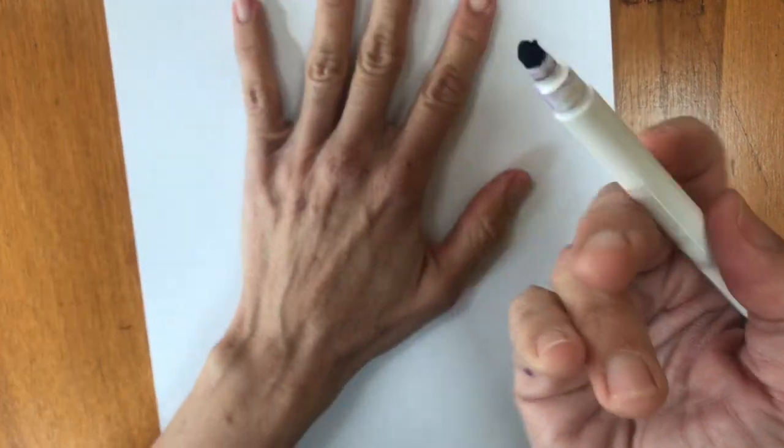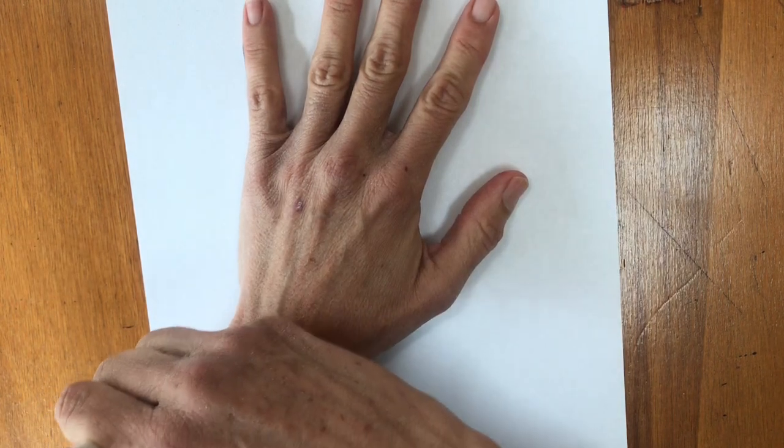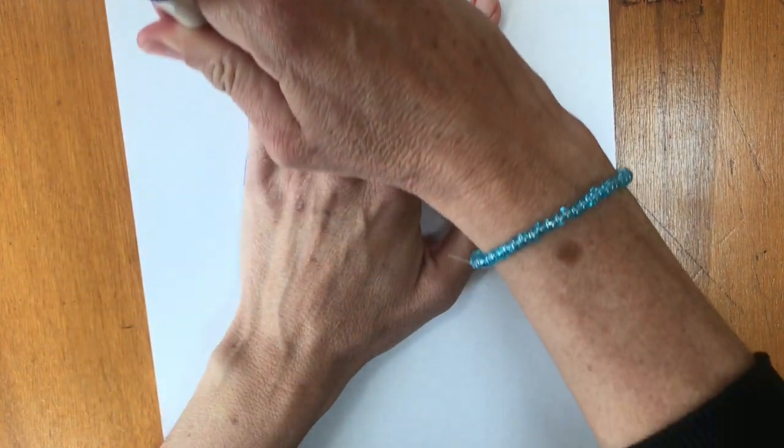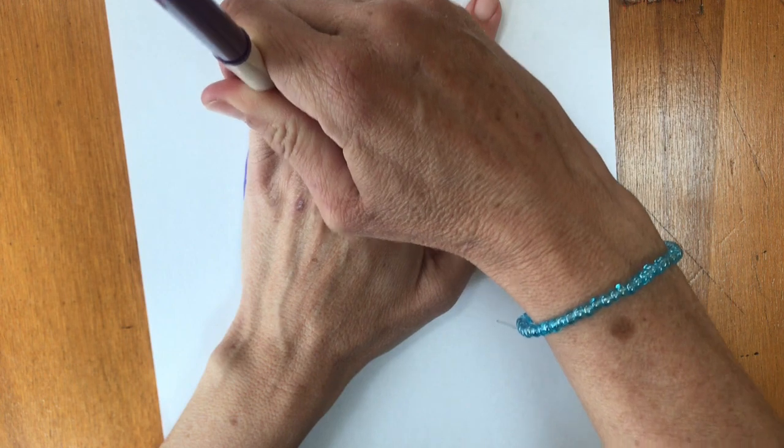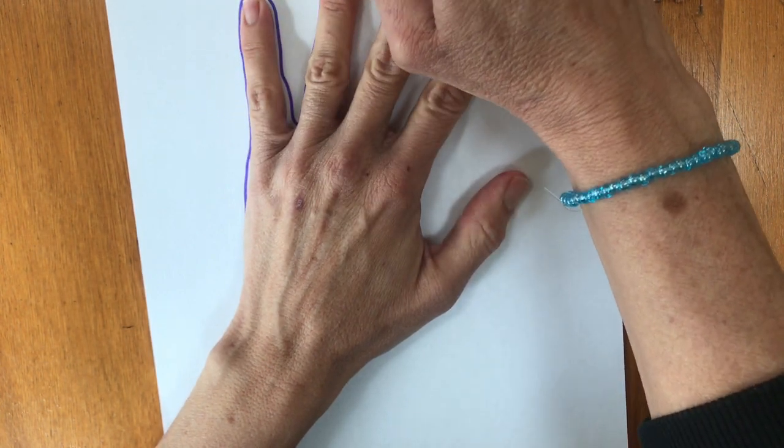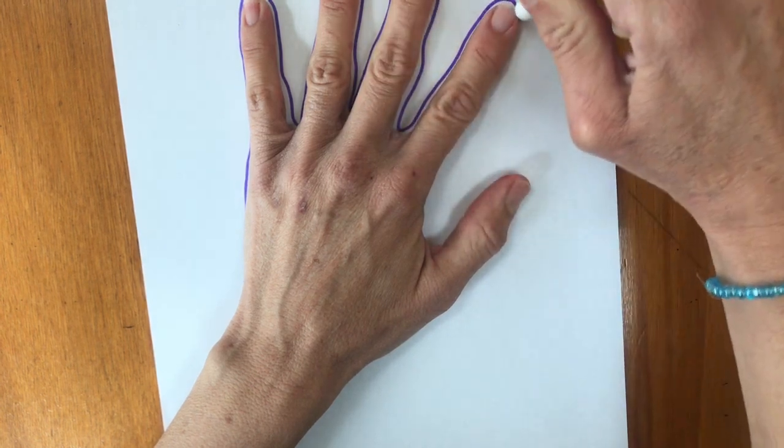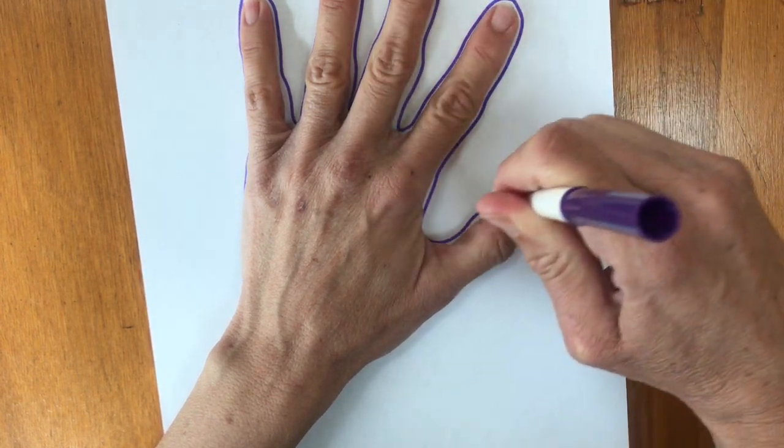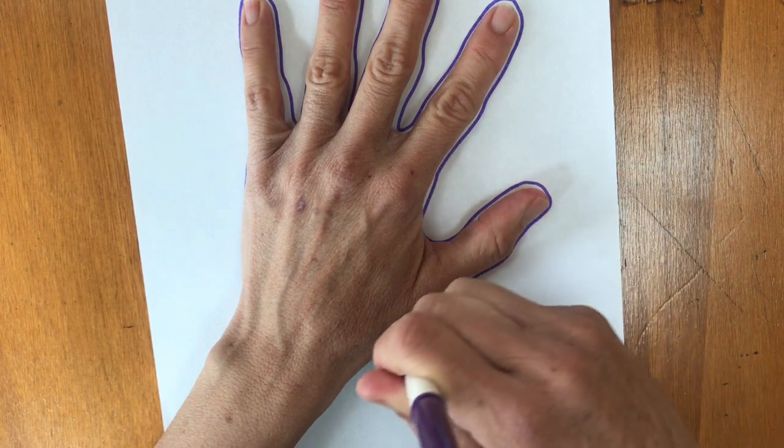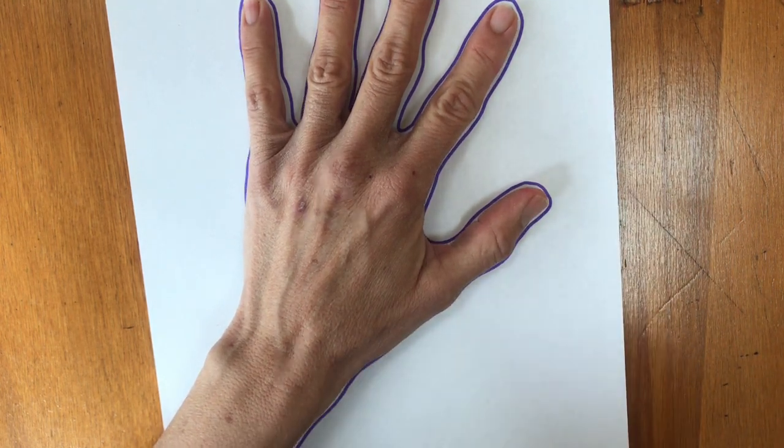With one hand, I'm going to trace with the other hand. I'm going to go right around all my fingers. I'm going to hold them still and make sure there's some spaces in between my fingers. You can have someone help you if you need to while you're tracing your hand, or do the best you can. It doesn't have to be perfect.